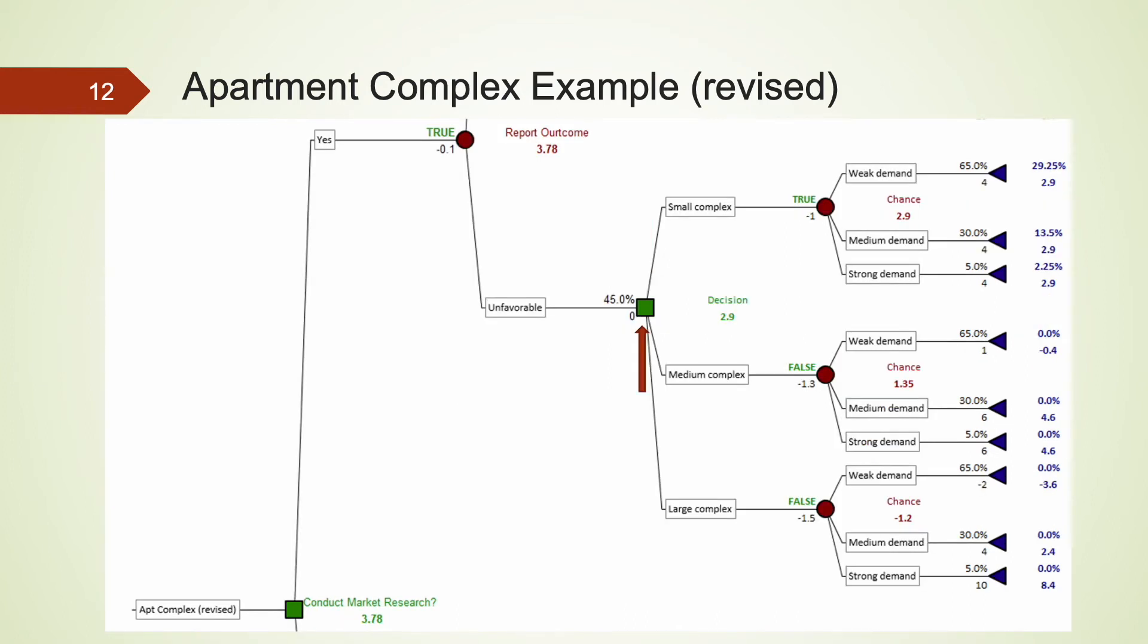The tree structure after an unfavorable report is also identical to the original single stage example. Again, the probabilities are different and needed to be revised. Please pause the video here and examine the payoffs and cash flows.